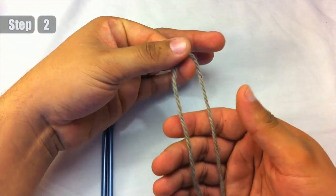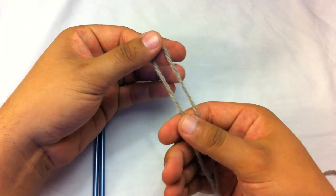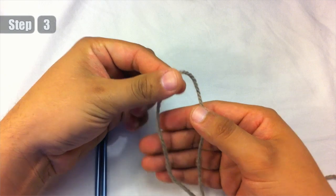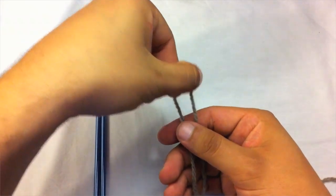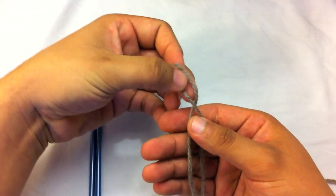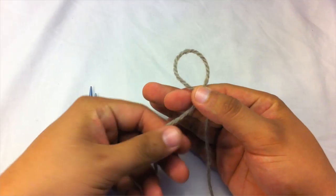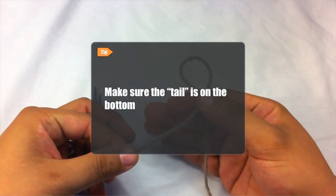Step 2. Take the yarn and make an upside down U in your hand. Step 3. Grab the U and twist the yarn to form a loop. This should look like an X when you're finished. Make sure the tail is on the bottom.